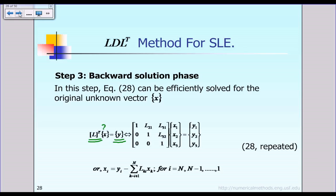To solve for the unknown vector X, we need to look at the last equation first, which is the third equation. From the last equation we can solve for X3. Then after solving for X3, we look at the next equation, which is the second equation, and from that we can solve for X2.